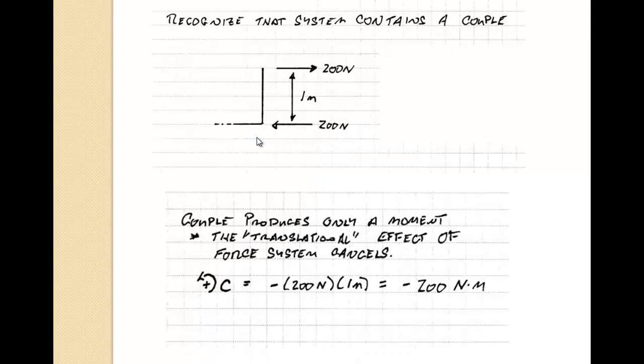So the first thing we're going to recognize is that the system contains a couple. This just simplifies the calculation. The couple is formed from two 200 newton forces that are parallel to each other. Their lines of action are parallel and they have a set distance apart. So the way we calculate the couple is first we look at its direction of rotation. In this case, it's going to be clockwise, which we define as being negative in our right-handed coordinate system. And it has a magnitude of 200 newtons and the distance between them.